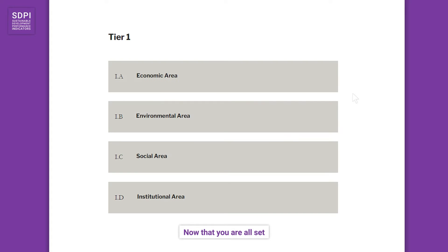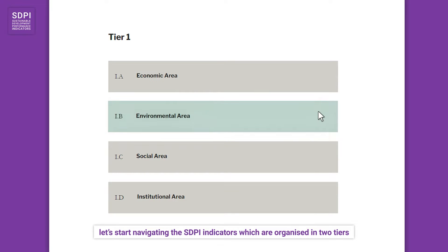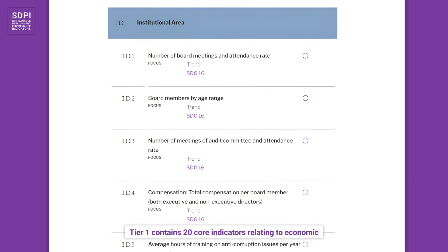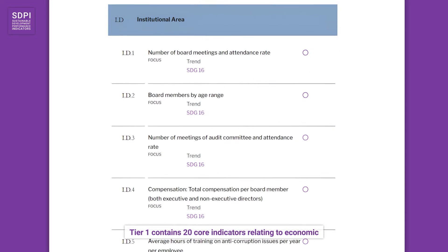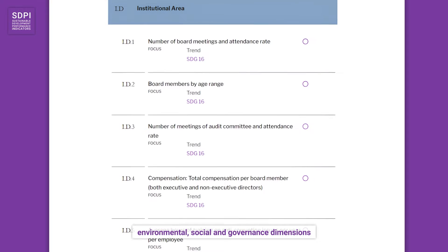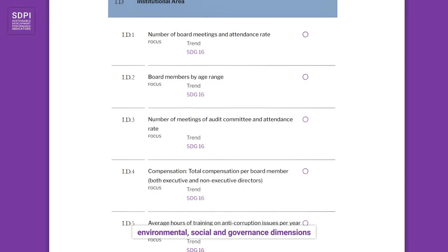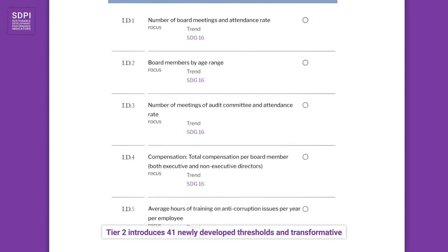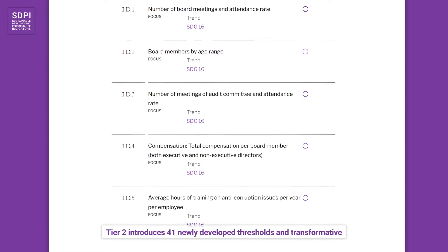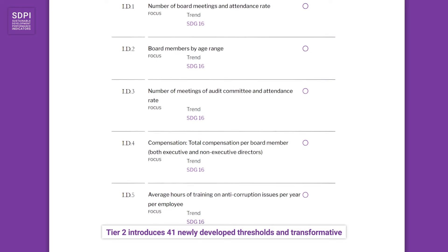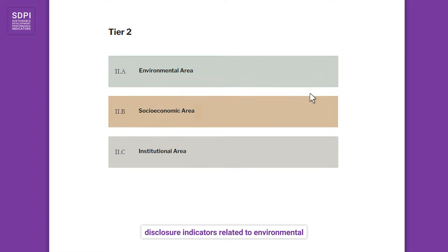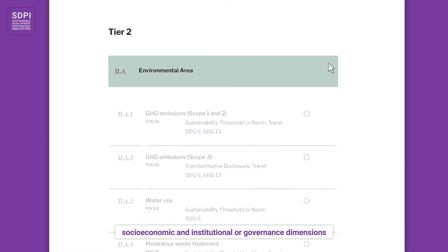Now that you are all set, let's start navigating the SDPI indicators, which are organized in two tiers. Tier 1 contains 20 core indicators relating to economic, environmental, social, and governance dimensions. Tier 2 introduces 41 newly developed thresholds and transformative disclosure indicators related to environmental, socioeconomic, and institutional or governance dimensions.